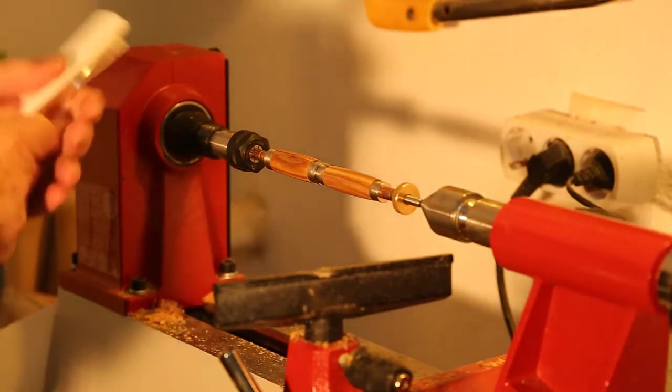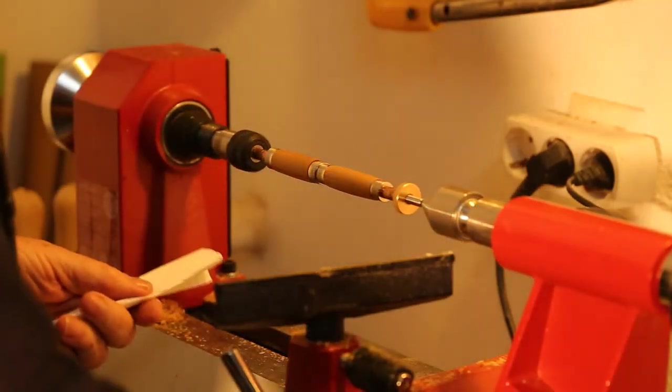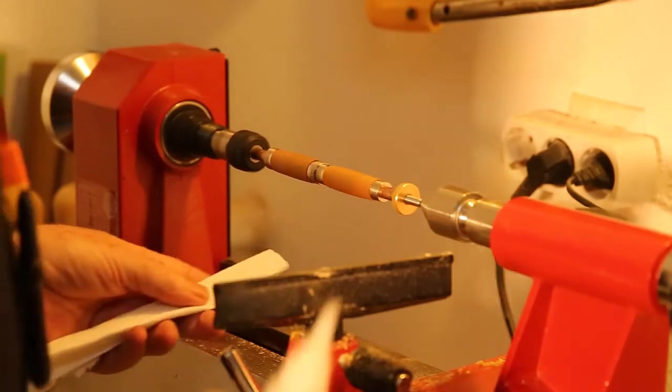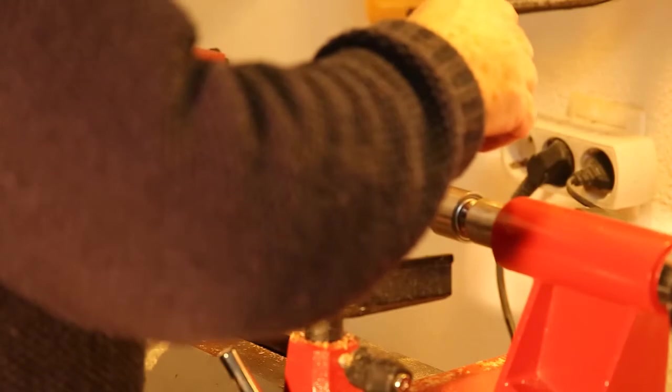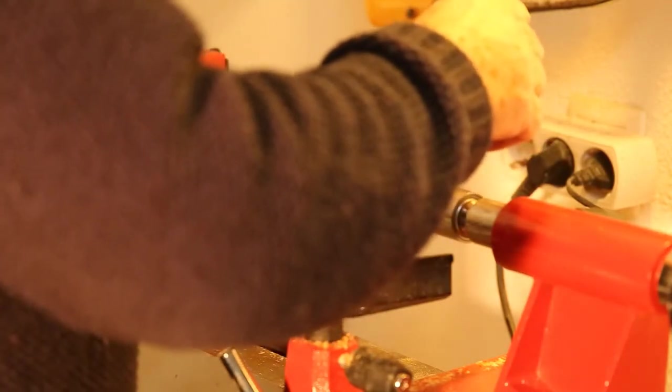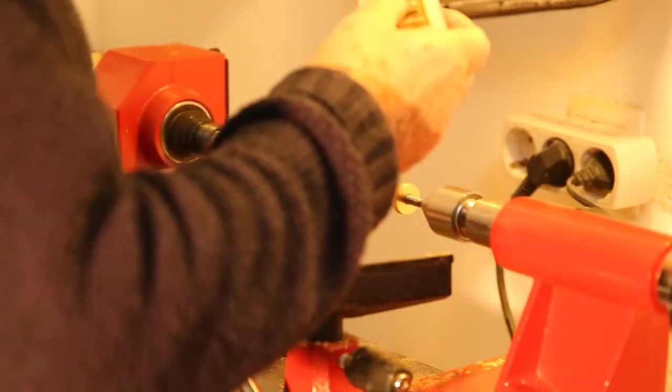Again, you use the paper towel, turn on the lathe, put some super glue on the paper, and just wipe it across. A very thin coat is all that's needed.